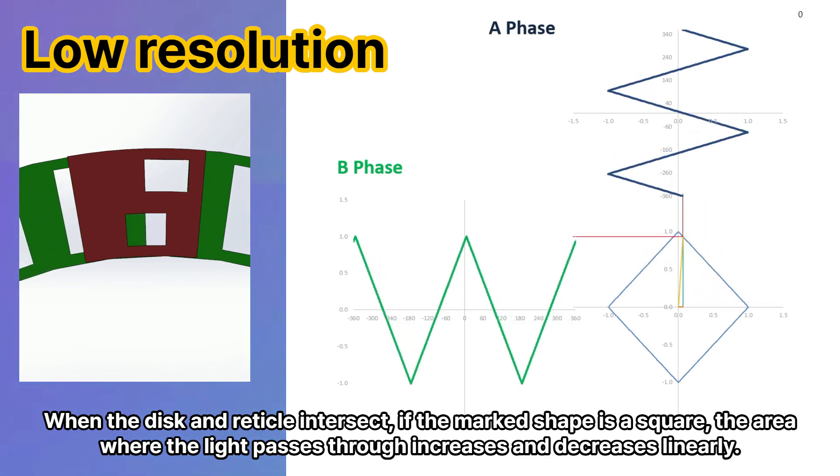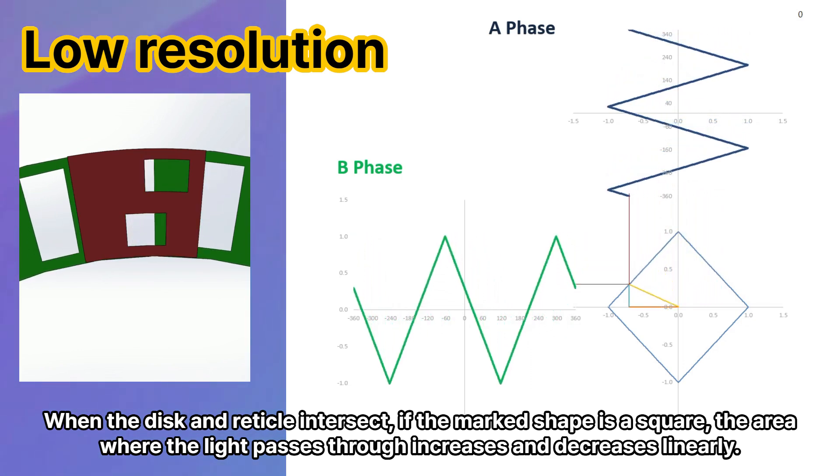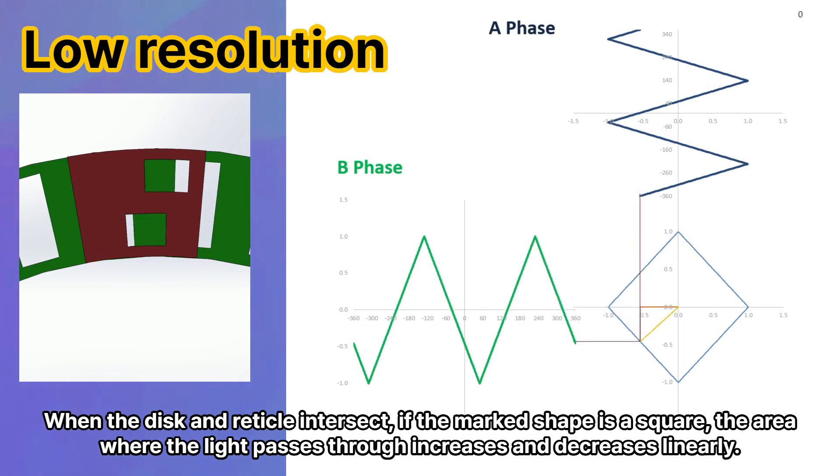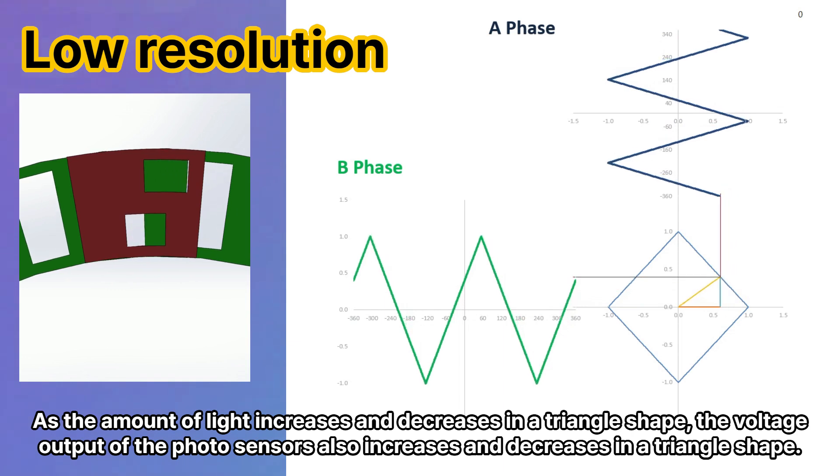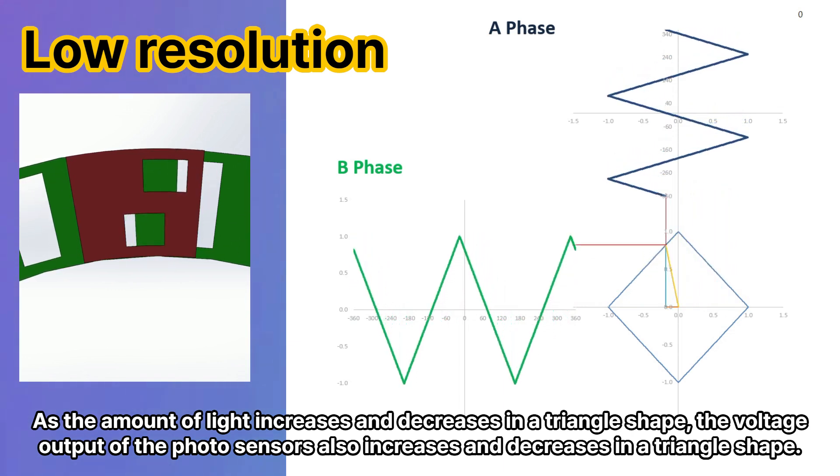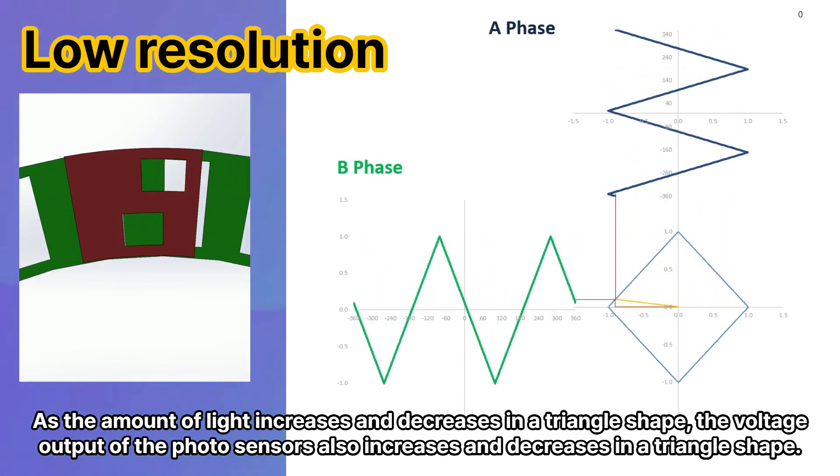When the disk and reticle intersect, if the marked shape is a square, the area where the light passes through increases and decreases linearly. As the amount of light increases and decreases in a triangle shape, the voltage output of the photosensors also increases and decreases in a triangle shape.